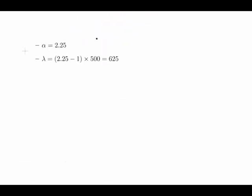And what does that mean? Alpha is 2.25. And necessarily because using the formula for the mean or rearranging the formula for the mean, which we know to be 500, that means that lambda is 625. So we have the parameters here for the Pareto distribution.